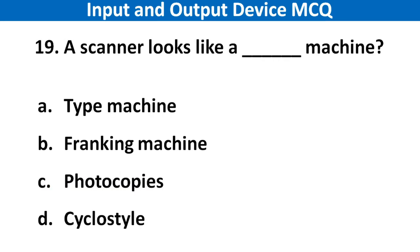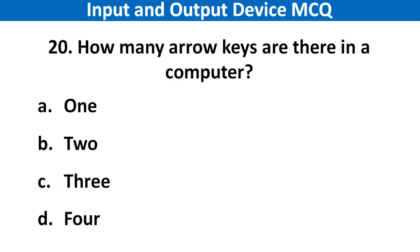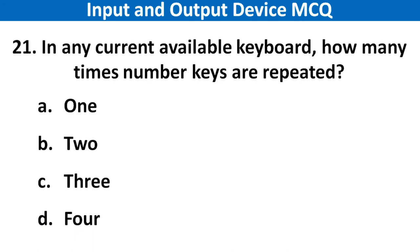Next question: A scanner looks like which machine? Right answer is option C: Photocopier. Next question: How many arrow keys are there in a computer? Right answer is option D: 4. Next question: In a currently available keyboard, how many times are number keys repeated? Right answer is option B: 2.